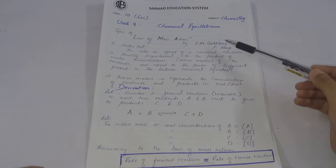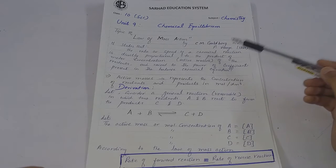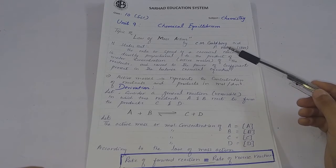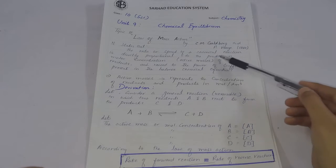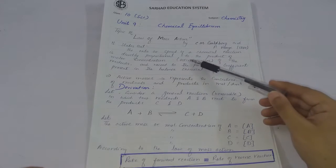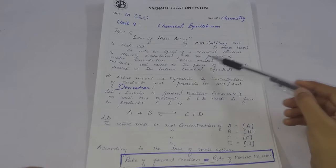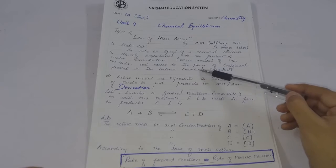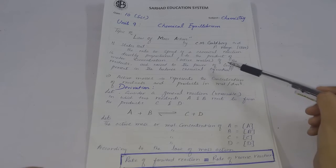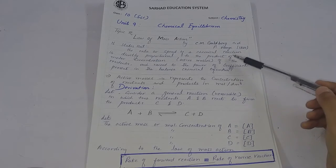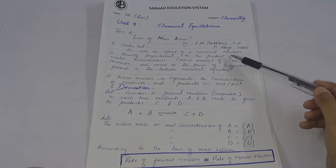First of all, we need to know who proposed it. The law of mass action says that the rate or speed of a chemical reaction is directly proportional to the product of the molar concentrations — that is, active masses — of the reactants, each raised to the power of the coefficient present in the balanced chemical equation.